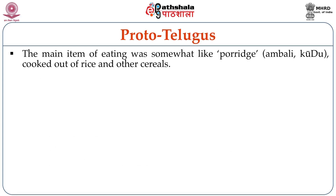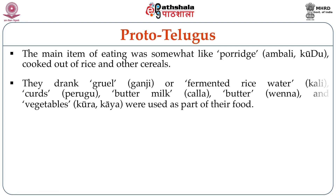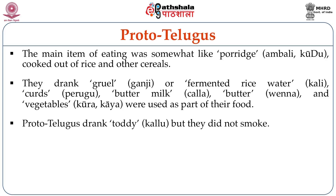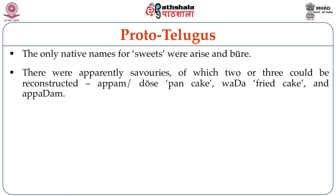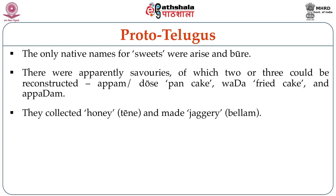The main item of eating was something like porridge, ambali or kudu, cooked out of rice and other cereals. They drank gruel, ganji, or fermented rice water, kalli. Curds (perugu), buttermilk (challa), butter (venna), and vegetables (kura, kaya) were used as part of their food. Proto-Telugu drank tadi and kallu but did not smoke. The only native names for sweets were arise and boore. Among savories, appam or dose (pancake), vada (fried cake), and appadam could be reconstructed. They collected honey, tene, and made jaggery, bellam.